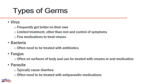The next category is bacteria — microorganisms that can survive in or out of the body. The most common ones are Staph, Streptococcus, Salmonella, and Shigella. These are very common infectious organisms and can be treated with antibiotics.